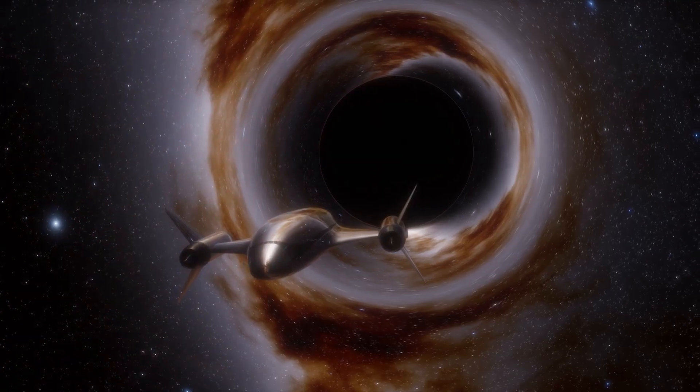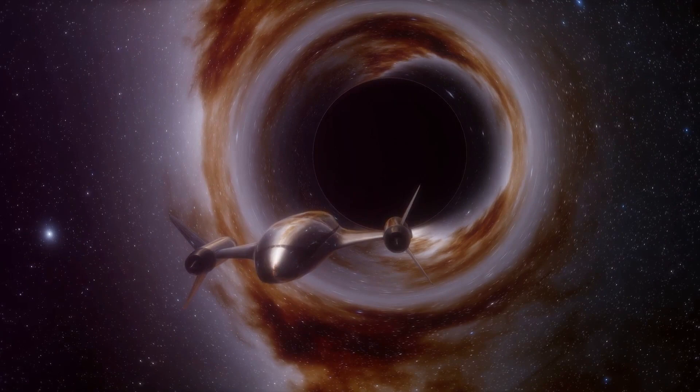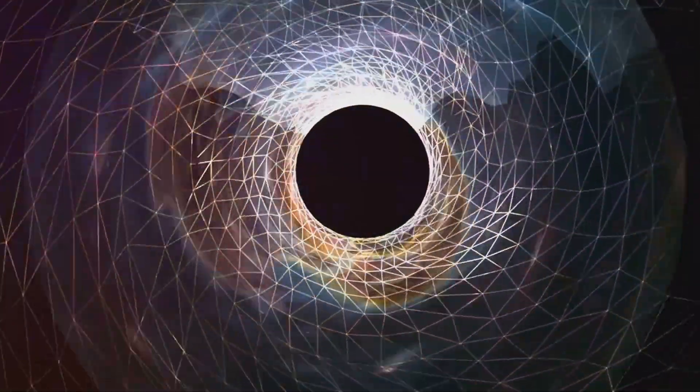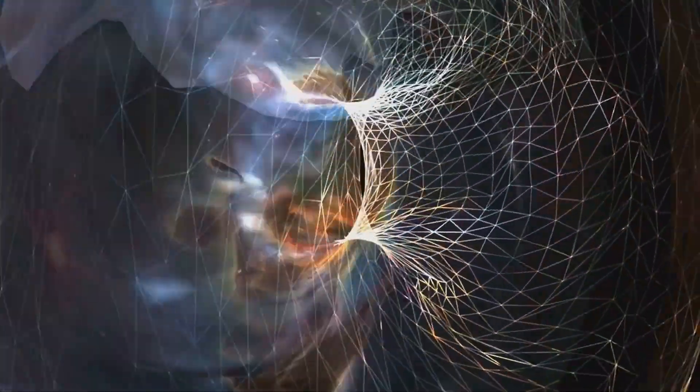While we don't know what dark matter is made of, physicists have several leading theoretical candidates. These hypothetical particles go by exotic names like WIMPs, Axions, and Sterile Neutrinos.